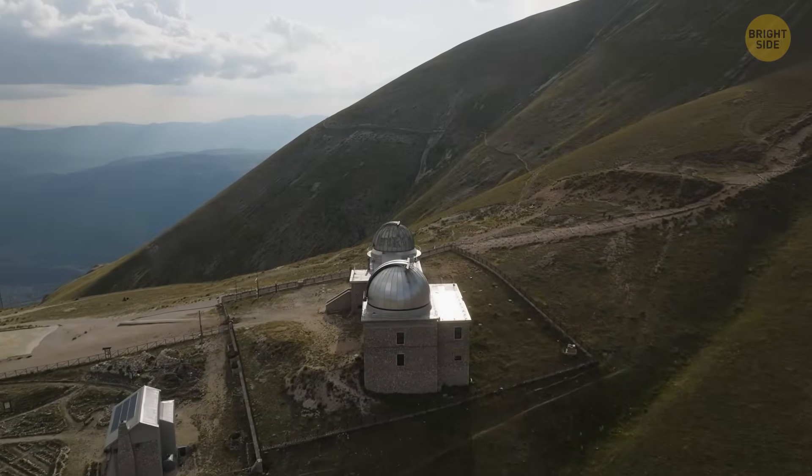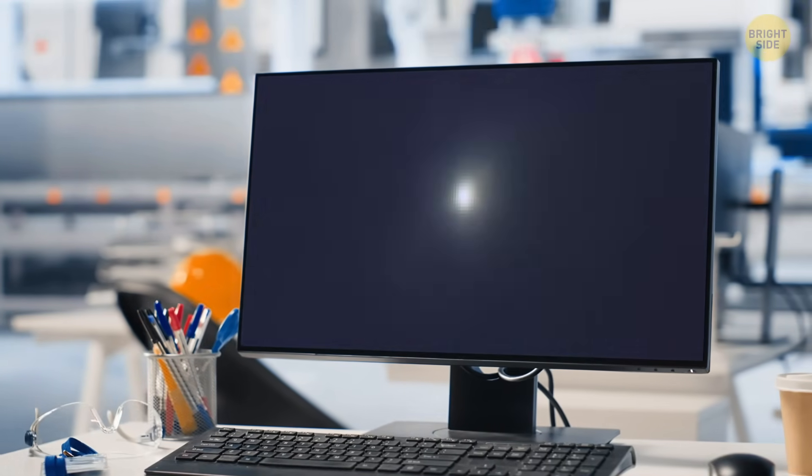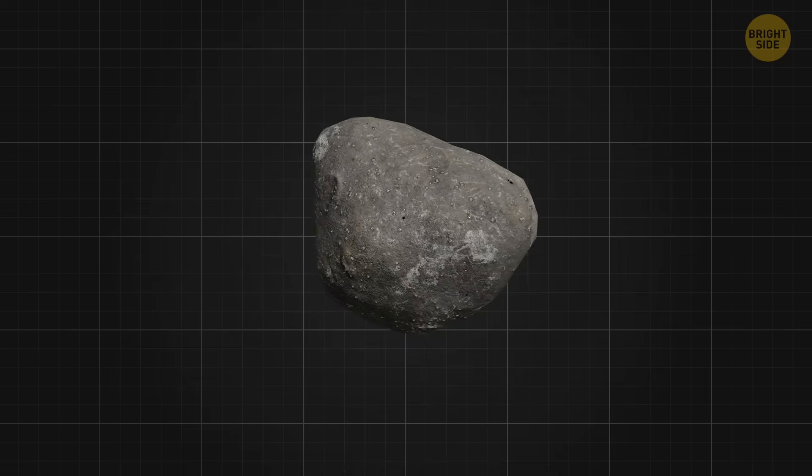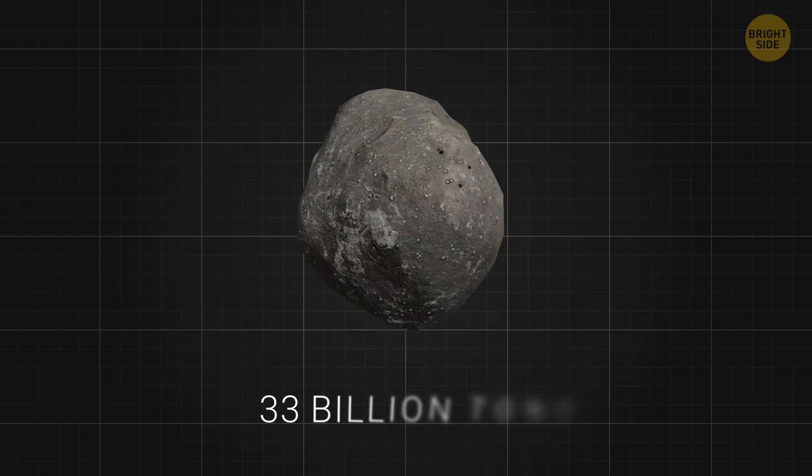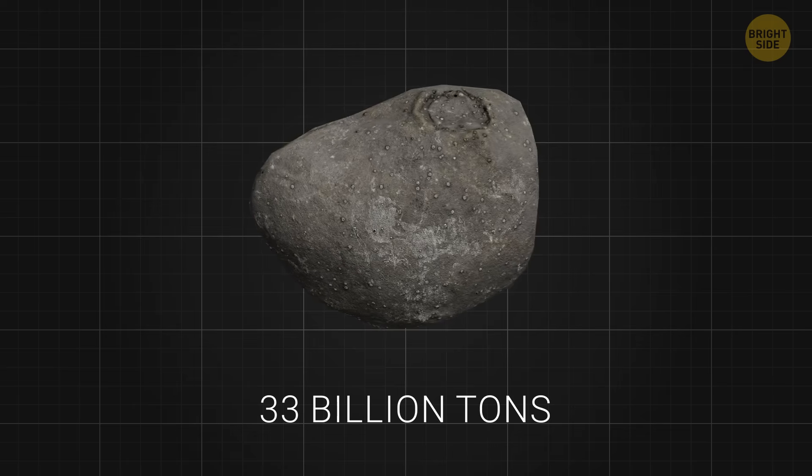But there's good news. A powerful telescope in Italy is streaming it live for free. So anyone can actually watch this mysterious object as it passes by. Scientists think this comet weighs about 33 billion tons. That number is hard to imagine, so here are a few comparisons.